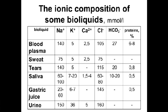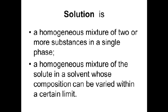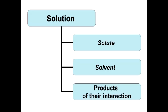These solutions have different compositions. They contain different amounts of cations, anions, and other molecules. A solution is a homogeneous mixture which can vary in composition. Solutions consist of a solute, a solvent, and sometimes products of their interaction.